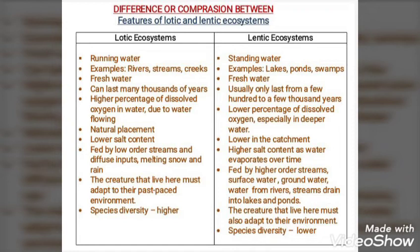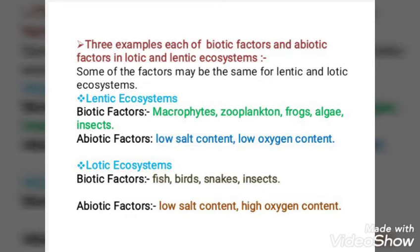Lotic ecosystems have lower salt content; lentic have higher salt content as water evaporates over time. Lotic ecosystems are fed by low-order streams and diffuse inputs such as melting snow and rain; lentic are fed by higher-order streams, surface water, and groundwater. Creatures in each must adapt to their environment. Species diversity is higher in lotic ecosystems and lower in lentic ecosystems.